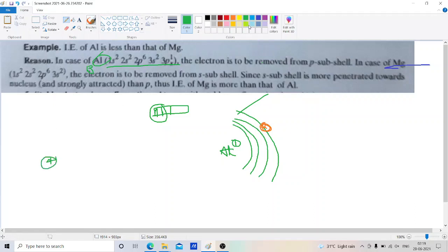This is the nucleus. From the nucleus, we have 1s, 2s, 2p, and 3s. The outermost shell is the s orbital. In the s orbital, there are two electrons present. The electron is to be removed from the s subshell.